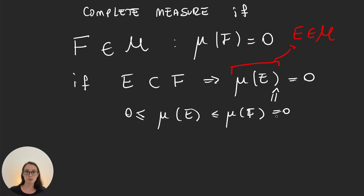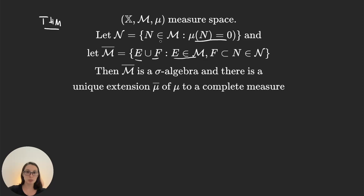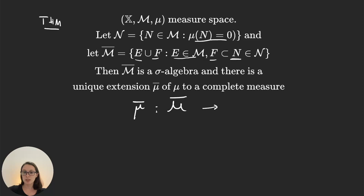Now there's an important theorem. We have a measure space, and we call N the set of elements in the sigma algebra that have measure 0. We create this new set M̄, made of all unions E∪F, where E is an element in our original sigma algebra and F is a subset of some set n of measure 0. The theorem tells us that M̄ is a sigma algebra, and there is a unique extension mu bar of mu to a complete measure defined on this sigma algebra — so mu bar goes from M̄ to [0, ∞).